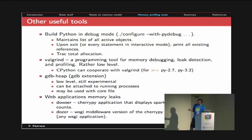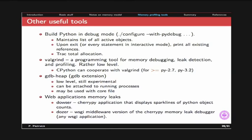Some other useful tools: you can always build Python in debug mode, use Valgrind with Python — it cooperates well — and use the experimental extension for GDB. For most web developers, you can use Dozer, which is a WSGI middleware version, more convenient because you can just put it in your WSGI stack and get memory profiling.